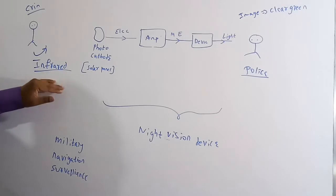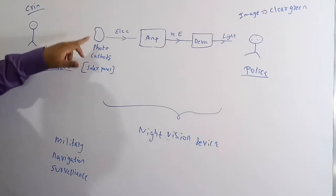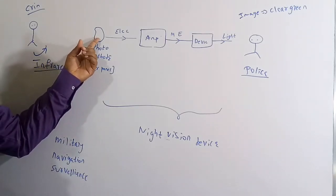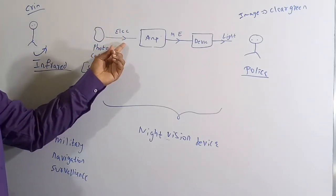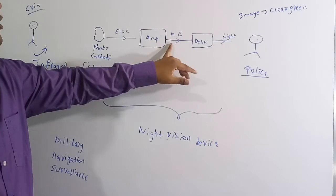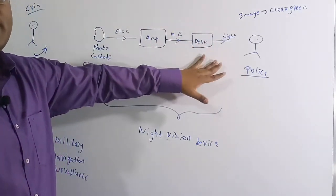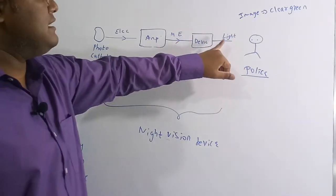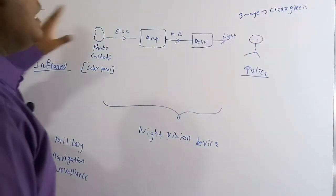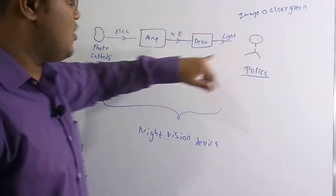The infrared rays emitted by the human body are caught by a photocathode, which acts like a solar panel. The photocathode converts them into an electrical signal, which is given to an amplifier. The amplified signal is then converted back into light, which the police officer or military person can see as a clear green image.